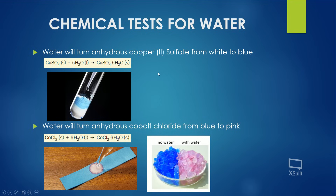There are some chemical tests for water. Water turns anhydrous copper sulfate from white to blue: anhydrous copper sulfate has no water and is white, but when water is added it becomes hydrated copper sulfate, which is blue. Similarly, water turns anhydrous cobalt chloride from blue to pink. A cobalt chloride paper can be used for this test — the anhydrous form is blue and turns pink in the presence of water.